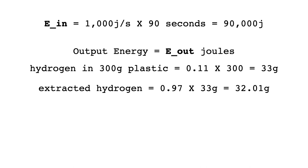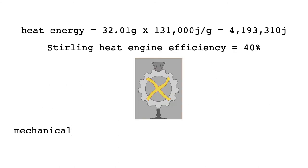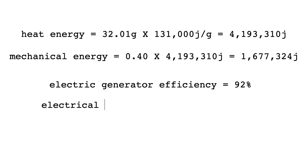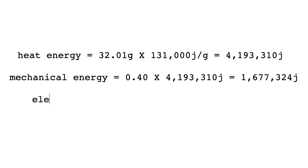The heat energy released by a controlled burn of those 32 grams of hydrogen is over 4 million joules. That heat energy drives the sterling engine, which transforms the heat into mechanical energy, about 1.6 million joules of it. The mechanical energy from the sterling engine drives the electrical generator, which produces about 1.5 million joules of electrical energy. That electrical energy is our output energy, E_out.